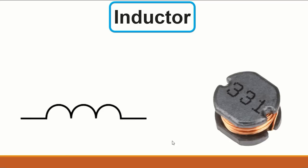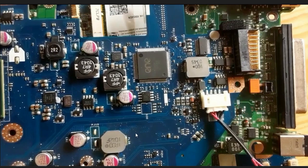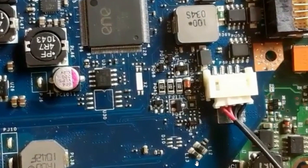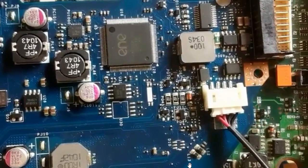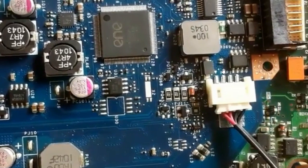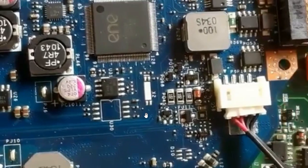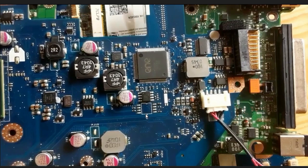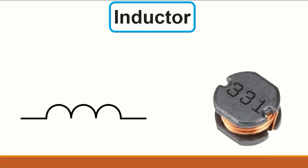Then we have the inductor. You can find this type of inductor in many motherboards — here we have this stacked type, and several others. You can also find inductors like this one, referenced as L. There is also another inductor here referenced as PL2. In some motherboards, especially older laptop or computer motherboards, you can find a different kind of inductor.